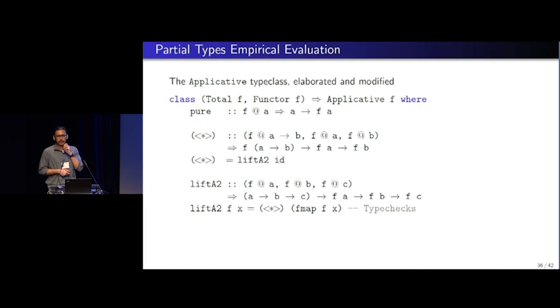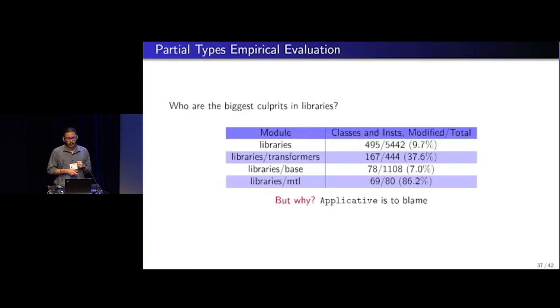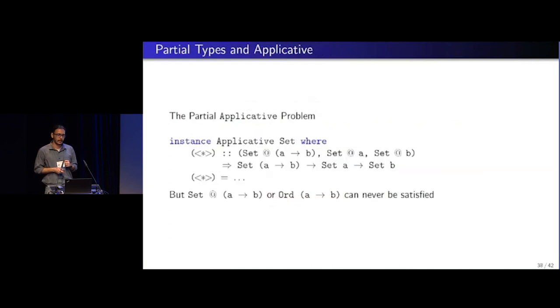So the easy solution is to just declare that it is total, right? Because we know that f at, that the function type needs to hold for splat to hold. So we declare that as total, and now type checks, right? Everyone's happy. But now, applicative is kind of just a super class for a lot of type classes. So the change is kind of pervasive, and you need to add totals to all the type classes that transitively depend on applicative. So applicative is to blame.